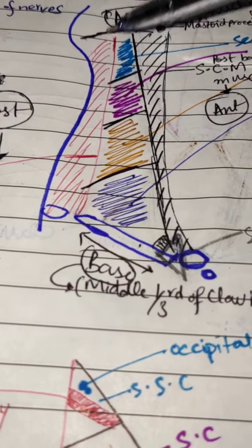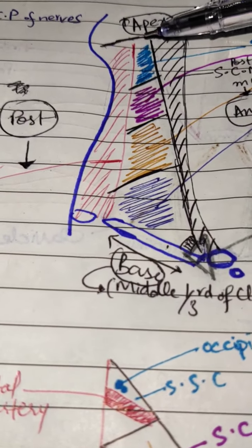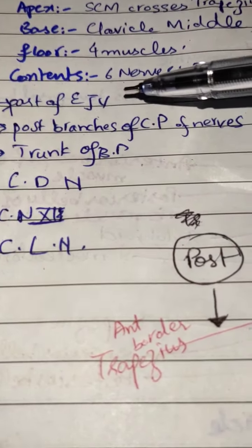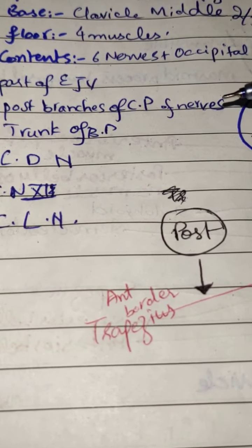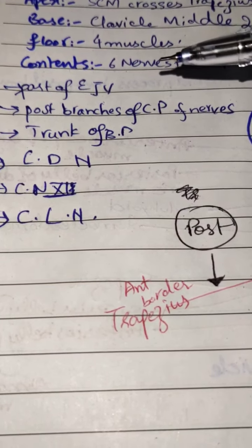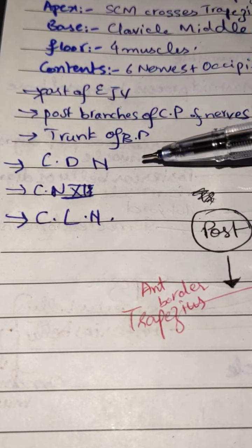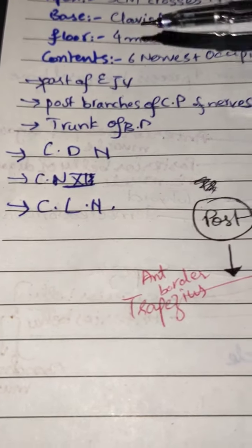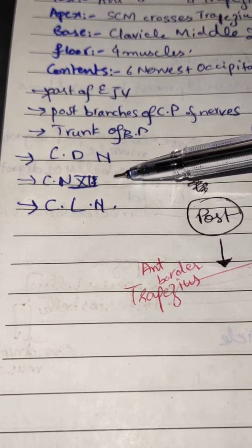The occipital triangle contains the posterior branches of the cervical plexus of nerves, cervical lymph nodes, the accessory nerve which is cranial nerve number 11, the trunk of the brachial plexus, the dorsal scapular nerve, and part of the external jugular vein.